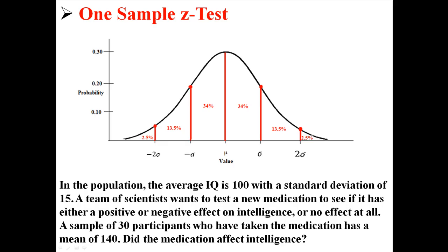In this example, we know the population standard deviation, which is 15, and we have a large enough sample size — in this case, it's 30. Because of those two pieces of information, we're going to do a z-test. If we didn't know the standard deviation of the population, we would actually do something called a t-test, which I talk about a little bit later.